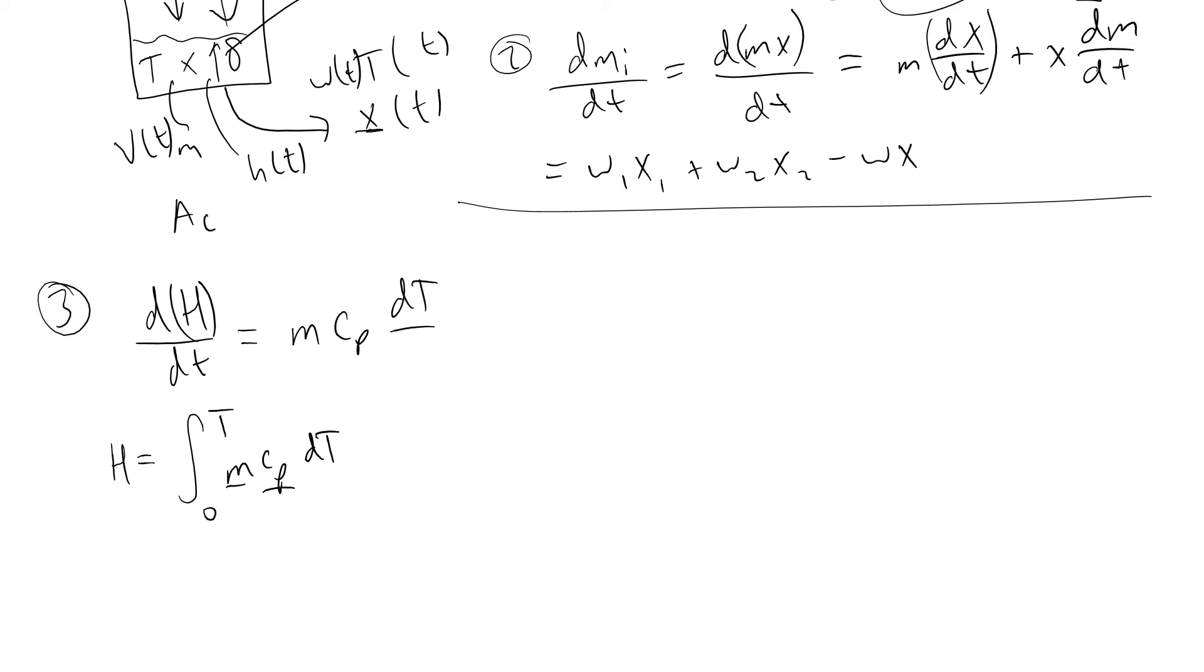Carrying on with this equation, we'd have m cp dT/dt. This tells us the left-hand side, how the enthalpy of the tank is evolving over time.